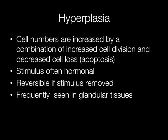Hyperplasia isn't simply the result of an increased number of cells due to increased cell division — decreased cell loss through apoptosis also plays a part. The stimulus for hyperplasia is often hormonal, and if the stimulus is removed it is reversible. Hyperplasia is frequently seen in glandular tissues.